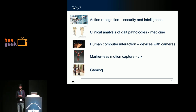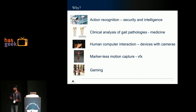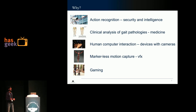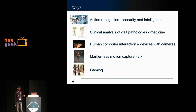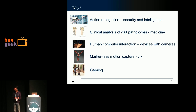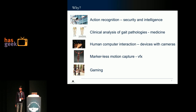Why would anybody want to do this? It turns out it is a basic problem in computer vision, and if we can solve this well there are a lot of things we can do with it. For example, we can do action recognition for security and intelligence, clinical analysis of gait pathologies to help patients with diseases such as Parkinson's, human-computer interaction to control software with cameras, and markerless motion capture for visual effects and gaming.